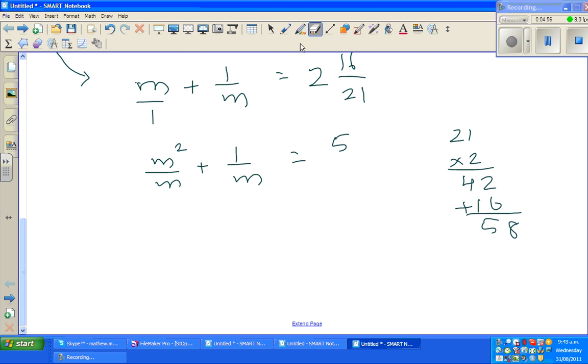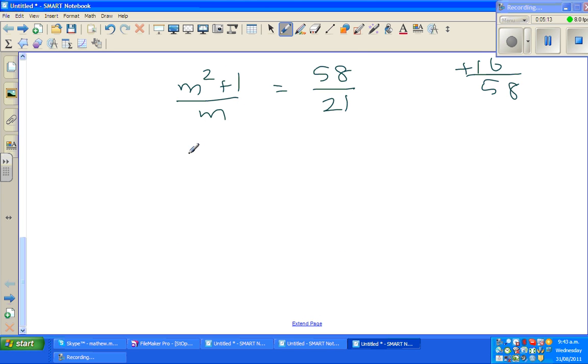So this is 58 over 21. Now the denominator is the same, so you can say that is m squared plus 1 over m is equal to 58 over 21. Now cross multiply, so this is 21m squared plus 21 is equal to 58m.